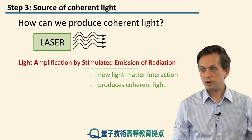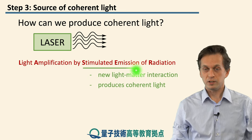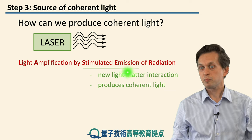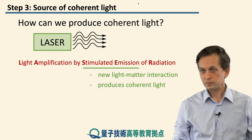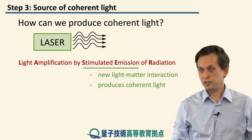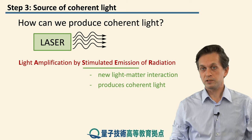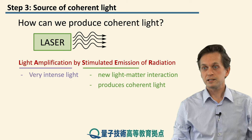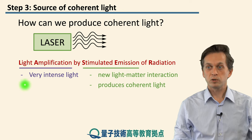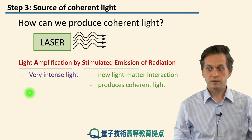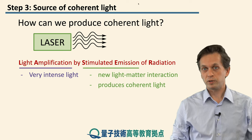First, we will talk about stimulated emission. This is the physical process behind lasing. It's a new type of light-matter interaction, and it is responsible for producing coherent light. We will also see that in the process of producing this coherent light, the light itself gets amplified, allowing us to create very intense light — much more intense compared to incandescent light sources.